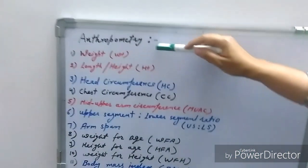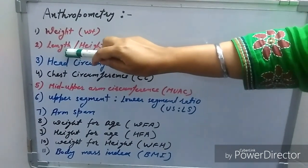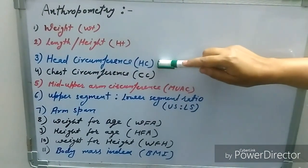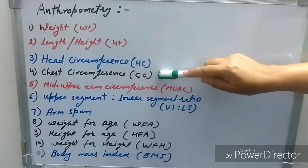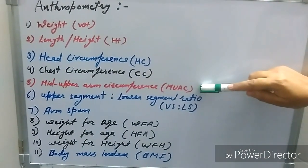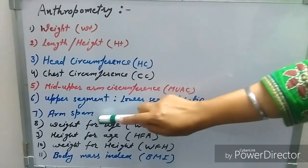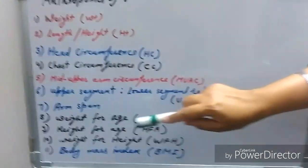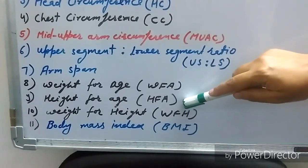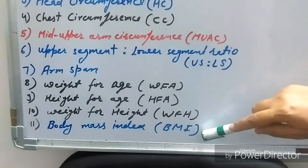In anthropometry we have to measure the weight, length if age is less than two years, height if age is more than two years, we have to measure the head circumference, chest circumference, if age is between six months to five years then mid upper arm circumference, upper segment lower segment ratio, arm span, and then we have to calculate weight for age, height for age, weight for height and body mass index.